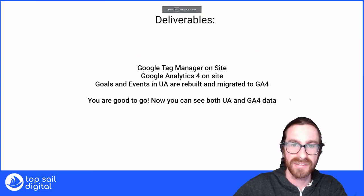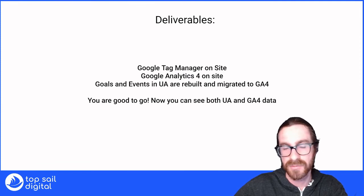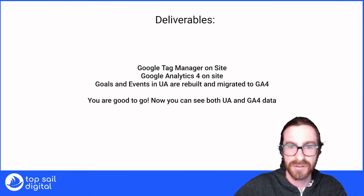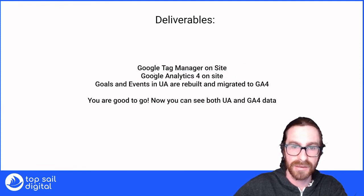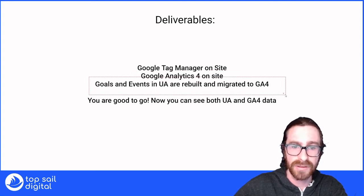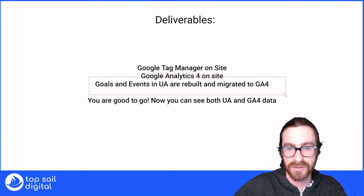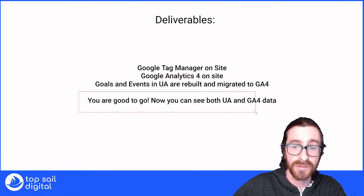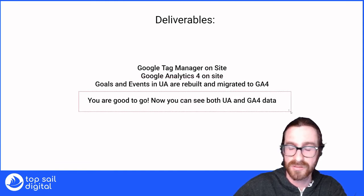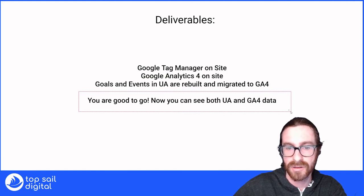Now that you've done that testing, here are the deliverables — kind of the summary. What have we delivered? You've created Google Tag Manager and added it to the site. You've added Google Analytics 4 to the site. Your goals and events are rebuilt in Universal Analytics and you've migrated those. You're good to go as long as you see those conversions and traffic inside GA4.